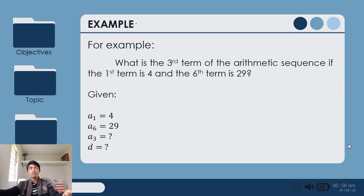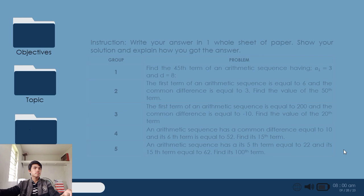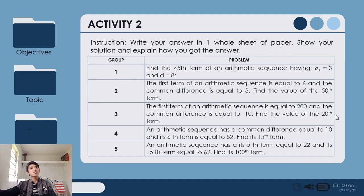So let's proceed. Next activity natin is same group pa rin. Each group have a different kinds of problem. Instruction: Write your answer in one whole sheet of paper. Show your solution and explain how you've got the answers. Group 1: Find the 45th term of an arithmetic sequence having a sub 1 equals 3 and d equals 8. Group 2, you have your problem 3, 4, and 5. You'll have 5 minutes to answer. Afterwards you're gonna explain it dito sa harapan.